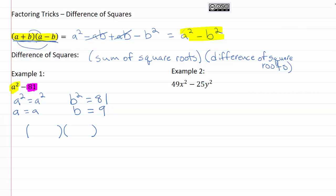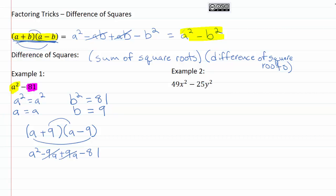Using this formula right here, we'll have the sum of the square roots — a plus nine — and the difference of the square roots — a minus nine. We can double check this by FOILing: first terms give a squared, outside terms minus nine a, inside terms plus nine a, and last terms minus eighty-one. The magic with this trick is that the middle terms cancel each other out, and we're just left with a squared minus eighty-one, our original expression. So this is successfully factored.